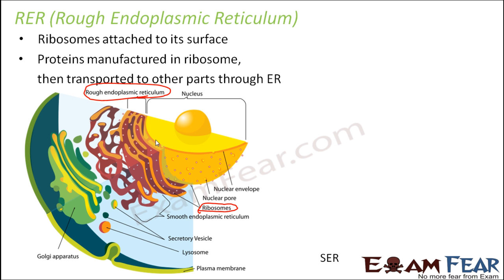The rough endoplasmic reticulum is continuous with the membrane of smooth endoplasmic reticulum. Rough ER ends here and then gets connected to smooth ER. So it is continuously connected to smooth endoplasmic reticulum on one side, and at certain places it is connected to the nuclear membrane on the other side. Both sides, it is continuously connected to either the nuclear membrane or the smooth endoplasmic reticulum.